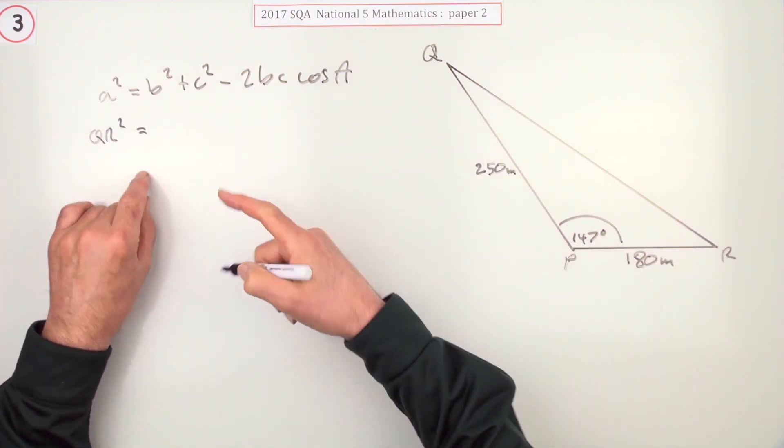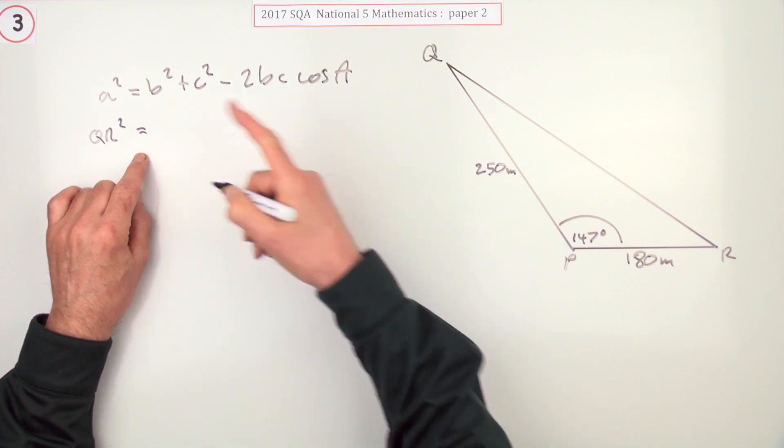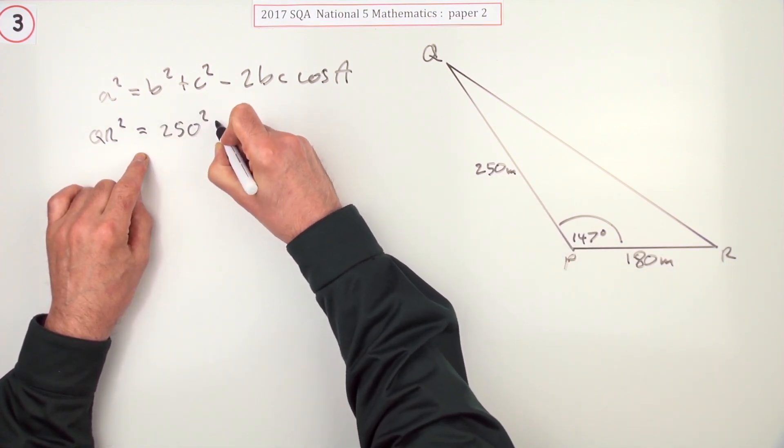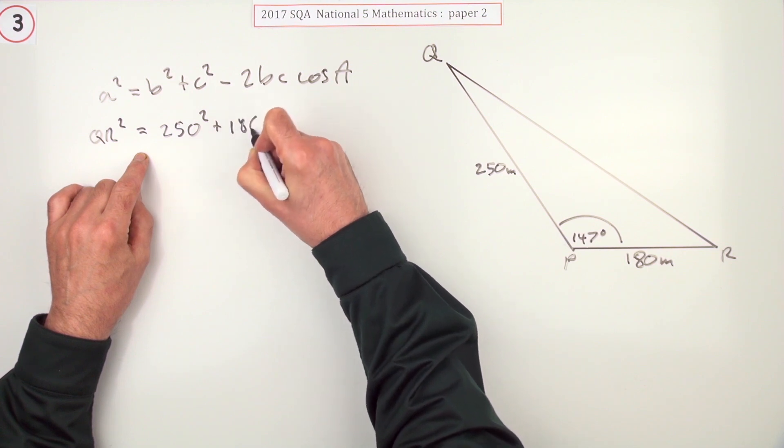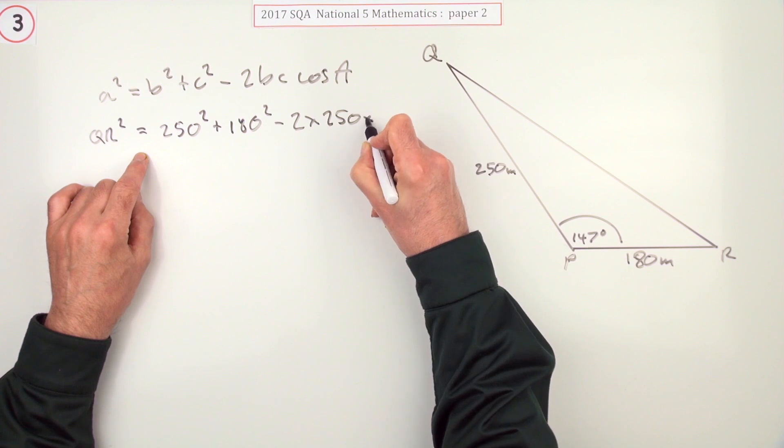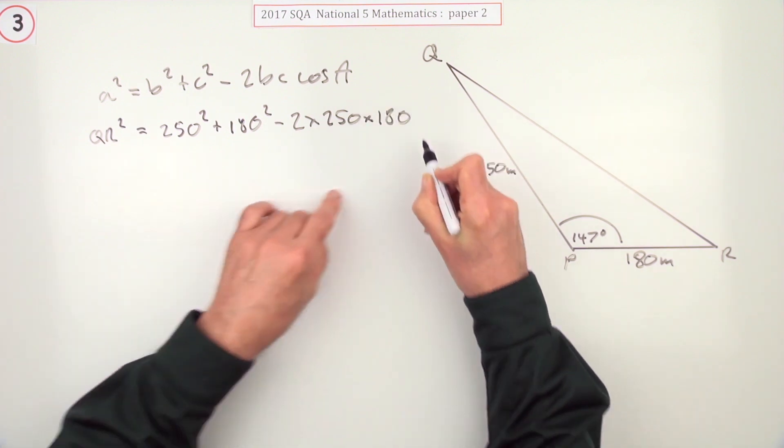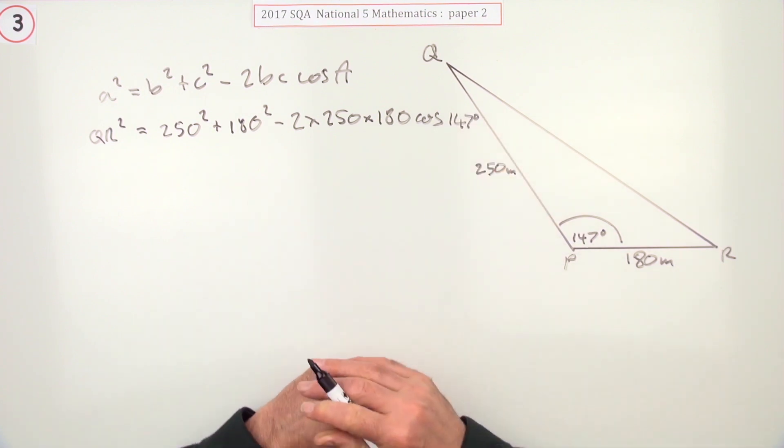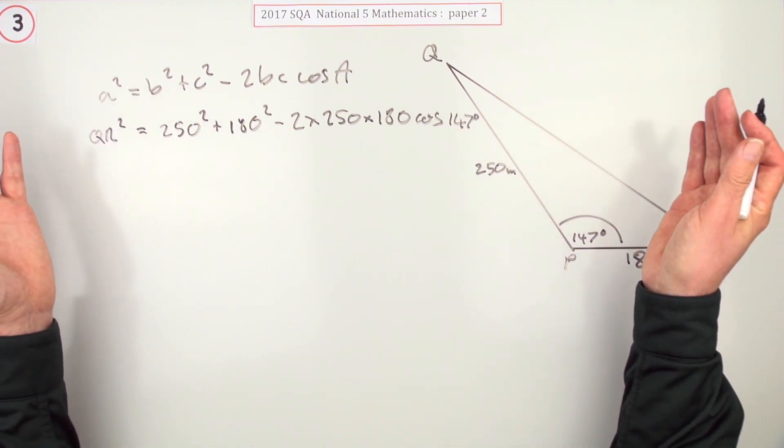QR squared will be these two sides: 250 squared plus 180 squared minus two times 250 times 180 times the cosine of 147, without bumping into that fence. Now that that's done, that's just the case of putting into a calculator.